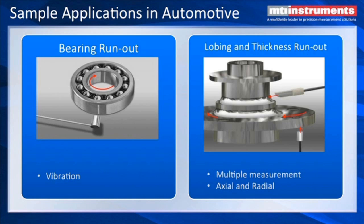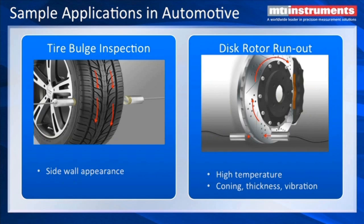Another popular application is lobing and axial and radial run-out on hubs for automobiles. We can measure with very high precision the types of defects that manufacturers want to check. We've also sold capacitance probes that measure automobile tires — there's a conductive material in the tire, and we can measure from the face of the probe through the tire back through the hub, which would be grounded.